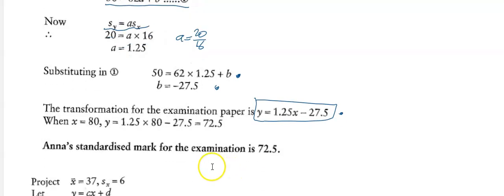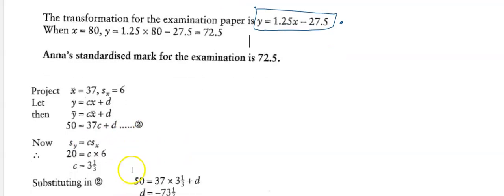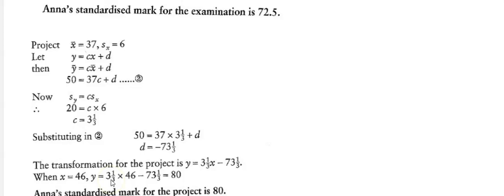Now applying the same method to the project. The project mean was 37 and the standard deviation was 6. Using the formula y equals cx plus d, the mean equation gives: 50 equals 37c plus d — call that equation 2. The standard deviation scaling formula gives: 20 equals c times 6, so c equals 20 divided by 6, which is 3 and a third.